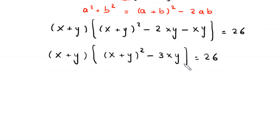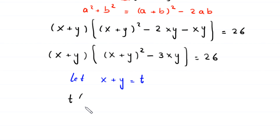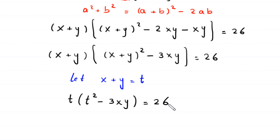Now we suppose that x plus y is equal to t. So this equation becomes t times t squared minus 3xy is equal to 26. Let us call this equation 3.